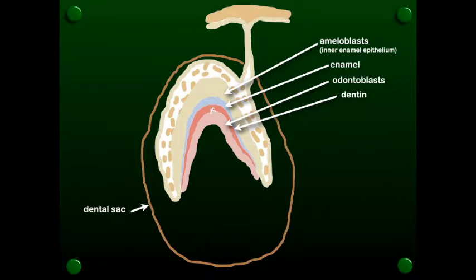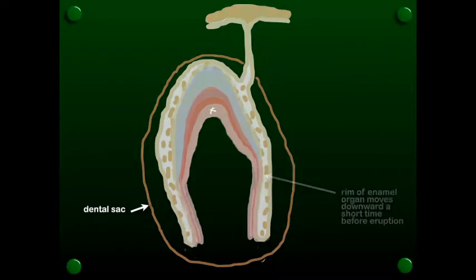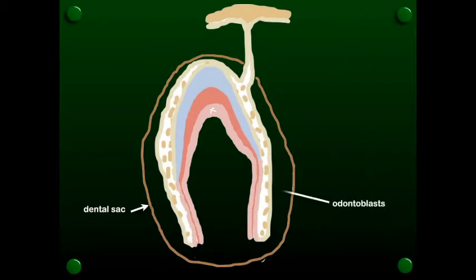This continues for some time and then shortly before eruption of the tooth, we're going to see the rim of the enamel organ moving downward like this. And with it, odontoblasts that are forming the dentin of the roots of the teeth.